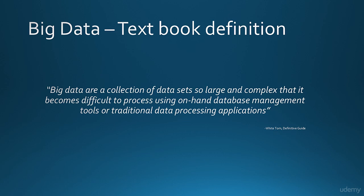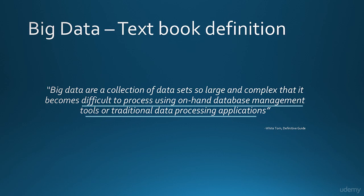Let's break down that definition. Big data are a collection of data sets — as we saw in the previous example, organizations are collecting data from a lot of data sources. The data sets are large and complex, and an organization would ideally like to consider as much data as possible to derive the most accurate results. That is why it became difficult for database management tools and traditional processing applications to process it as the volume increased. We would learn later in this course as to why the single server architecture started to fail.